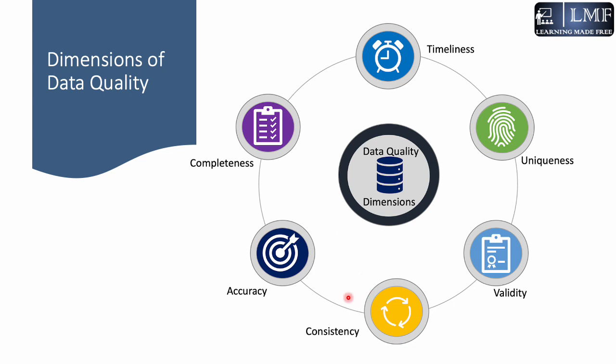The third element is consistency. This dimension is the measure of whether the same set of data is uniform across different systems. The data has to be consistent across various systems across your organization.